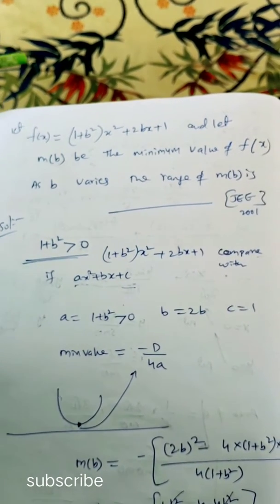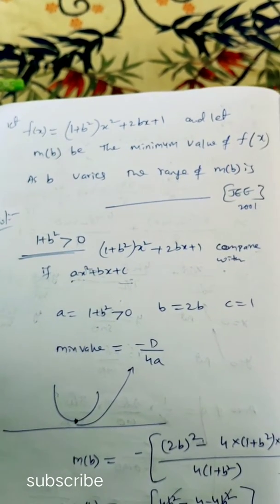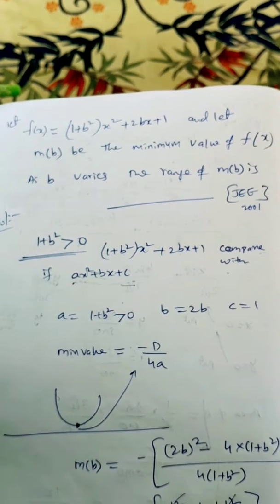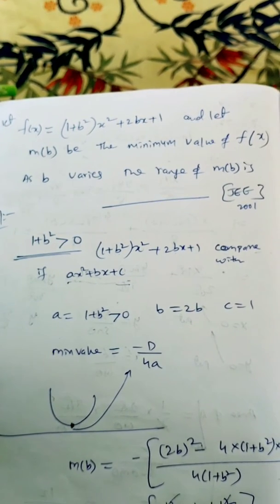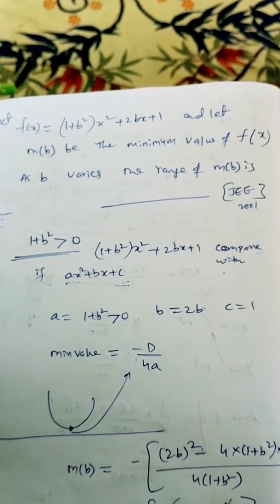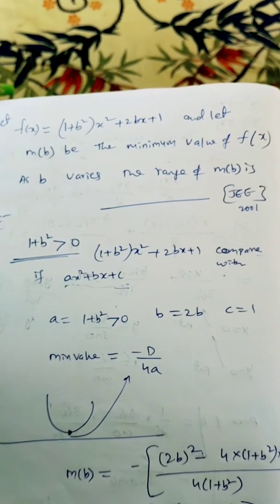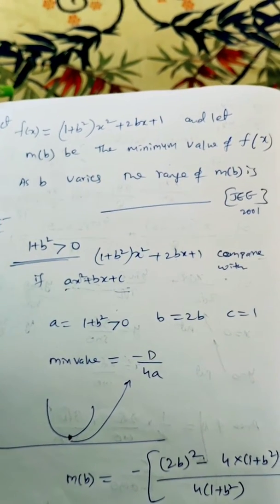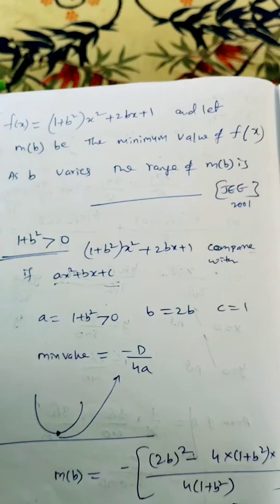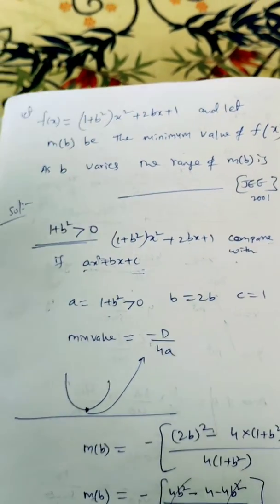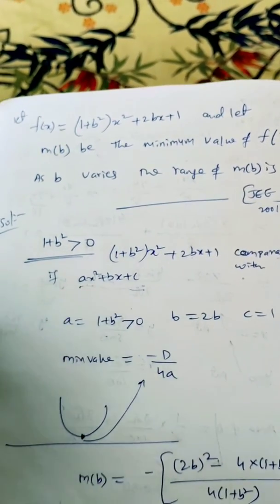Hello students, let us discuss a question which is asked in JEE 2001. f(x) = (1+b²)x² + 2bx + 1, and let m(b) be the minimum value of f(x) as b varies. The range of m(b) is? This is the question asked in 2001 JEE.